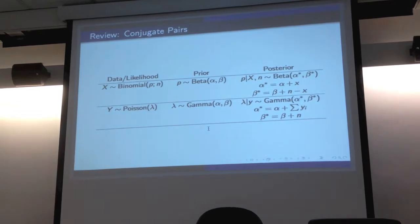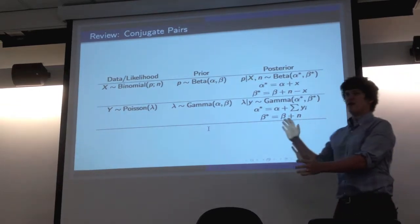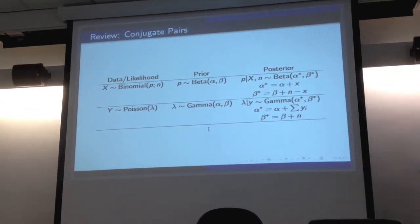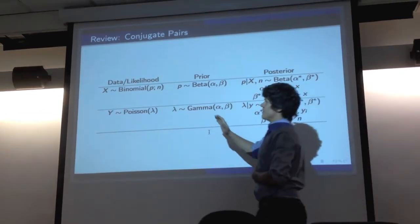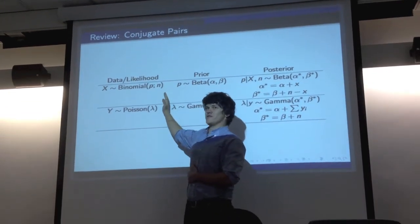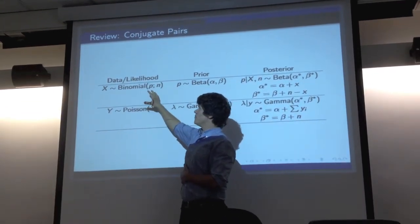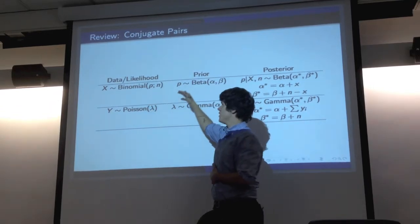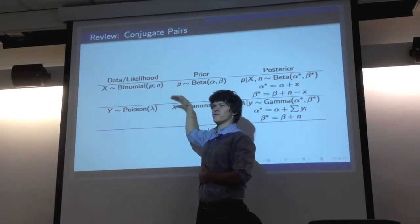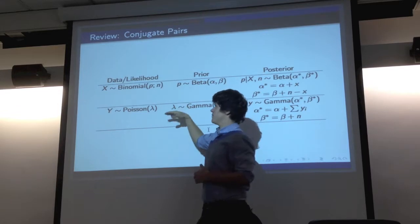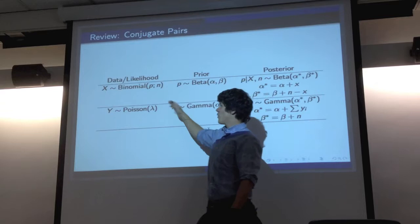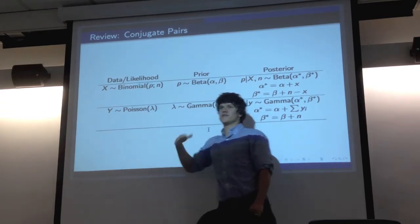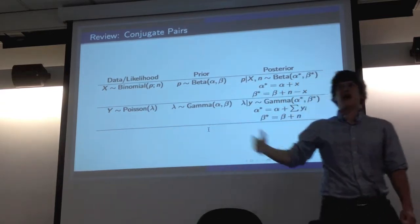Let me just summarize conjugate pairs real quick. I thought this table would help organize the thoughts on conjugate pairs. Basically, if you're given a problem, you know what form your data takes. You have two different conjugate pairs: either your data can take the form of binomial — counts of successes — or it can take the form of Poisson, where you've got something occurring over time and space.